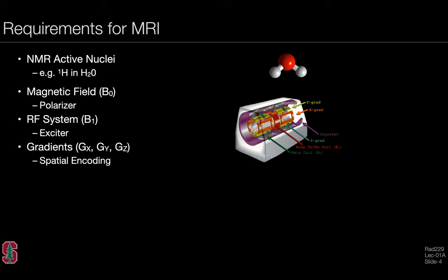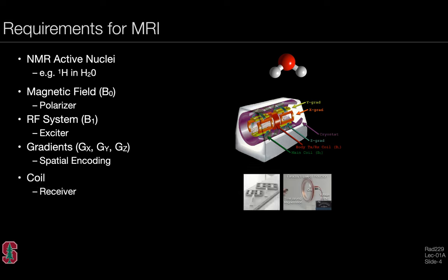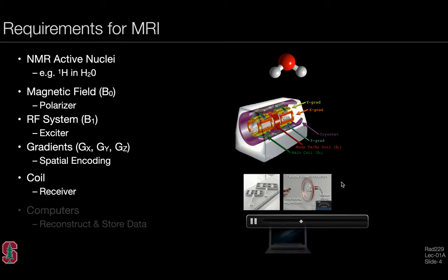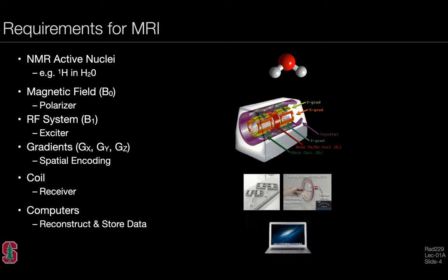We also need gradients, the GX, GY, and GZ gradients, whose principal function is spatial encoding. Finally, we need coils or receivers that are available for detecting the transverse magnetization according to Faraday's law of induction. And needless to say, there are several computers involved that are required for reconstructing and storing the data.